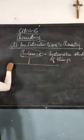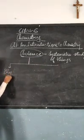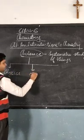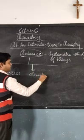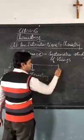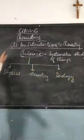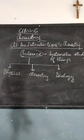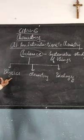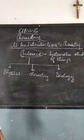Basically, there are 3 branches of science. The first branch of science is physics. The second is chemistry, and the third branch is biology. So these are the 3 branches of science. We will not be studying science as one subject but we will be studying physics, chemistry, and biology as separate subjects.